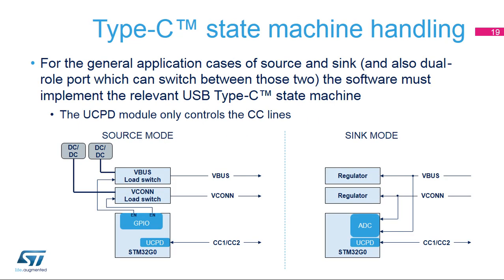The Type-C state machine is implemented in software. It depends not only on CC pin levels but also on the port role. In sink mode, it depends on VBUS presence detection. In source mode, it depends on VCON generation and the VBUS state — on, off, voltage level, and discharge. The UCPD module only controls the CC lines; other modules are involved to control VBUS and VCON power supplies. In source mode, GPIOs are required to control power delivery dynamically. In sink mode, ADC channels are used to monitor VBUS and VCON supplies.